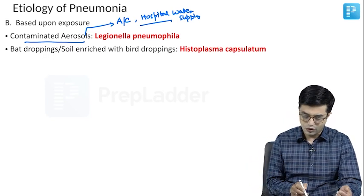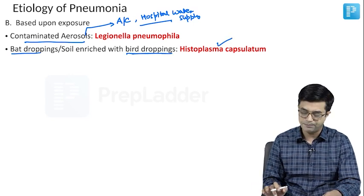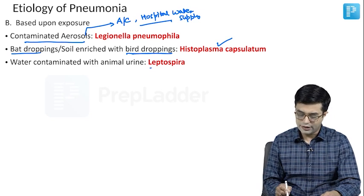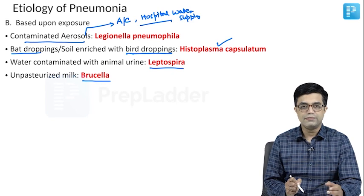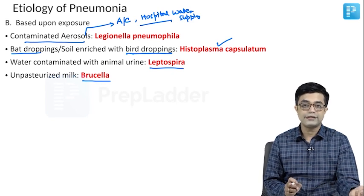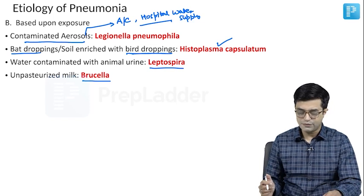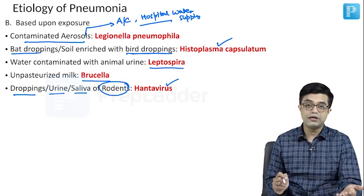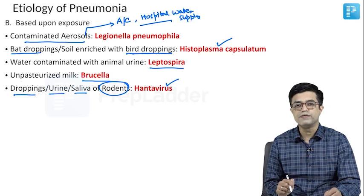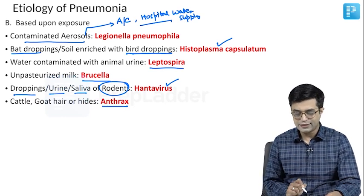Bird droppings or soil enriched with bird droppings — the likely organism is Histoplasma capsulatum. Water contaminated with animal urine — likely organism is Leptospira. Unpasteurized milk — Brucella (which more commonly causes fever or pyrexia of unknown origin but can sometimes cause pneumonia). Droppings, urine, or saliva of rodents can cause Hantavirus, frequently reported from certain provinces of China. Cattle, goat hair, or hide exposure increases the risk of anthrax.